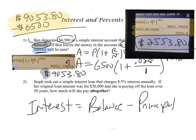So Ben has earned $2,553.80 in interest. This is a formula that you want to write down: interest equals the balance minus the principal.